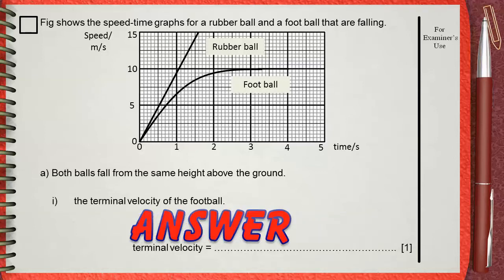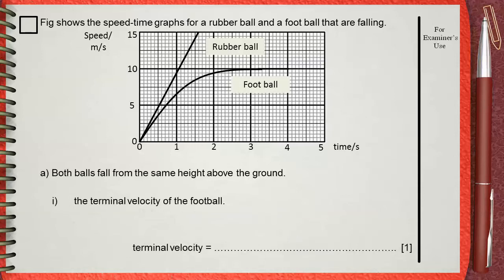The terminal velocity is the maximum constant speed reached by the falling object. If we look at the graph of the football, we will find that this maximum constant speed is 10 meters per second. This is the terminal velocity of the football as it falls down.